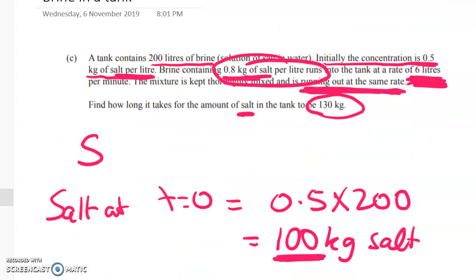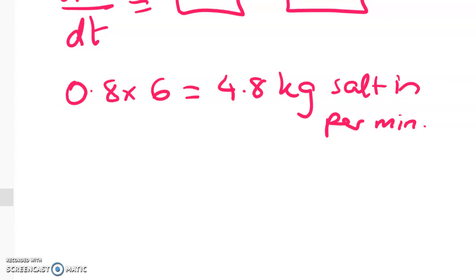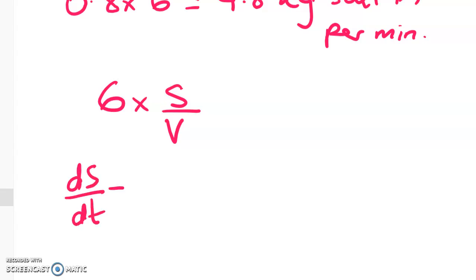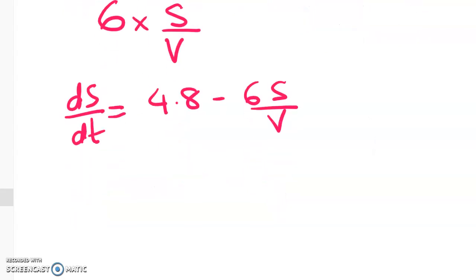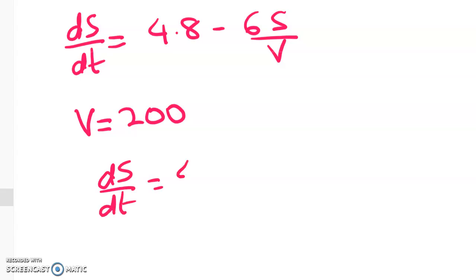Now, what about the salt going out? Well, we know that the inflow is 6 litres of liquid per minute, right? And the outflow is at the same rate. So there's 6 litres going out. So the outflow is going to be 6 litres times the proportion of salt, so the S divided by the V. So this is the concentration. Now, when you see this, this is what I wrote down first when I looked at it. So we've got dS by dt is equal to 4.8 minus 6S over V. And my heart sank for a minute, because I saw S and I saw V. I saw two variables. But the volume is constant, right? We know that the inflow and the outflow are the same, and we know that there's 200 litres. So that means that the volume is always 200.